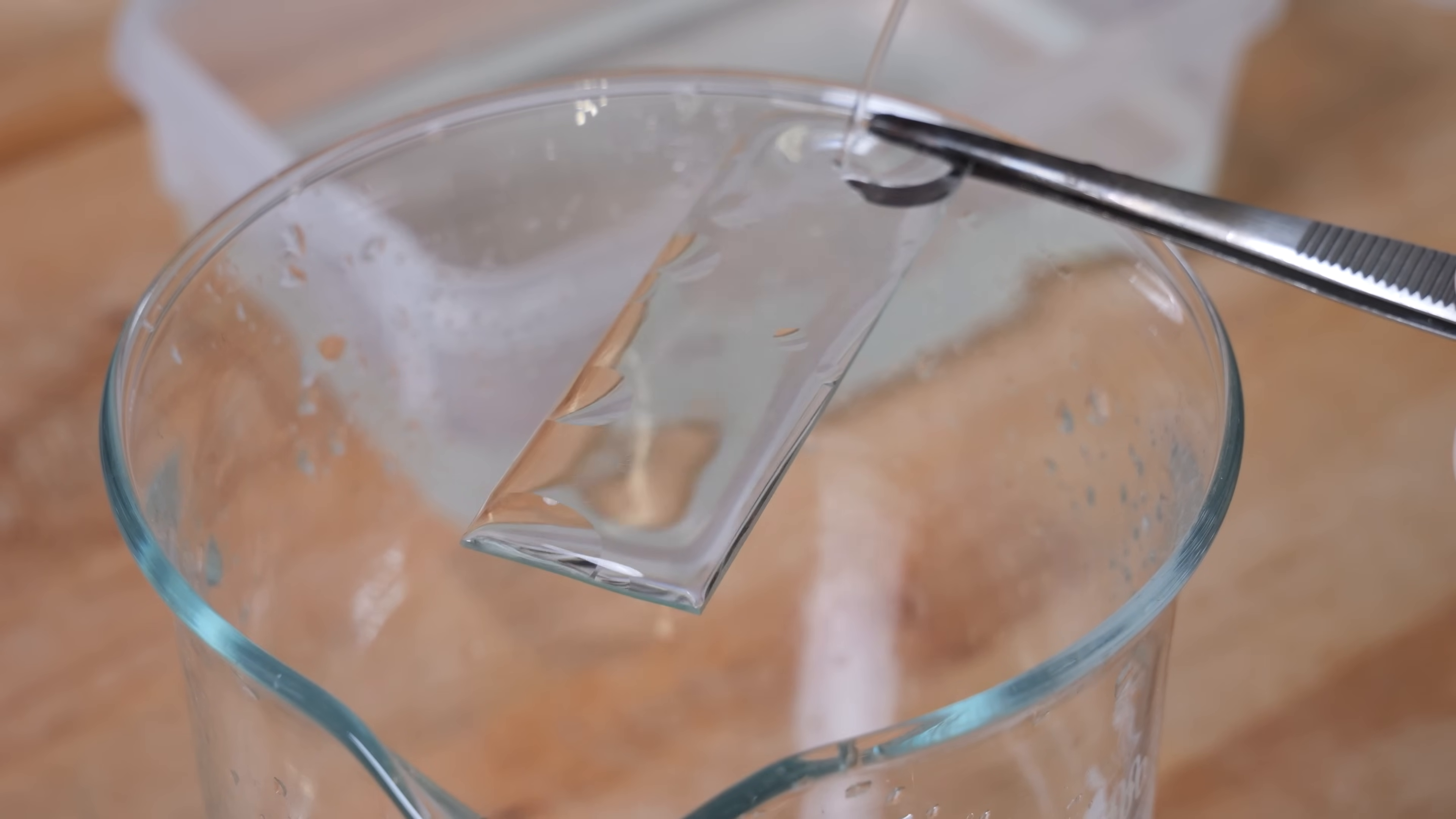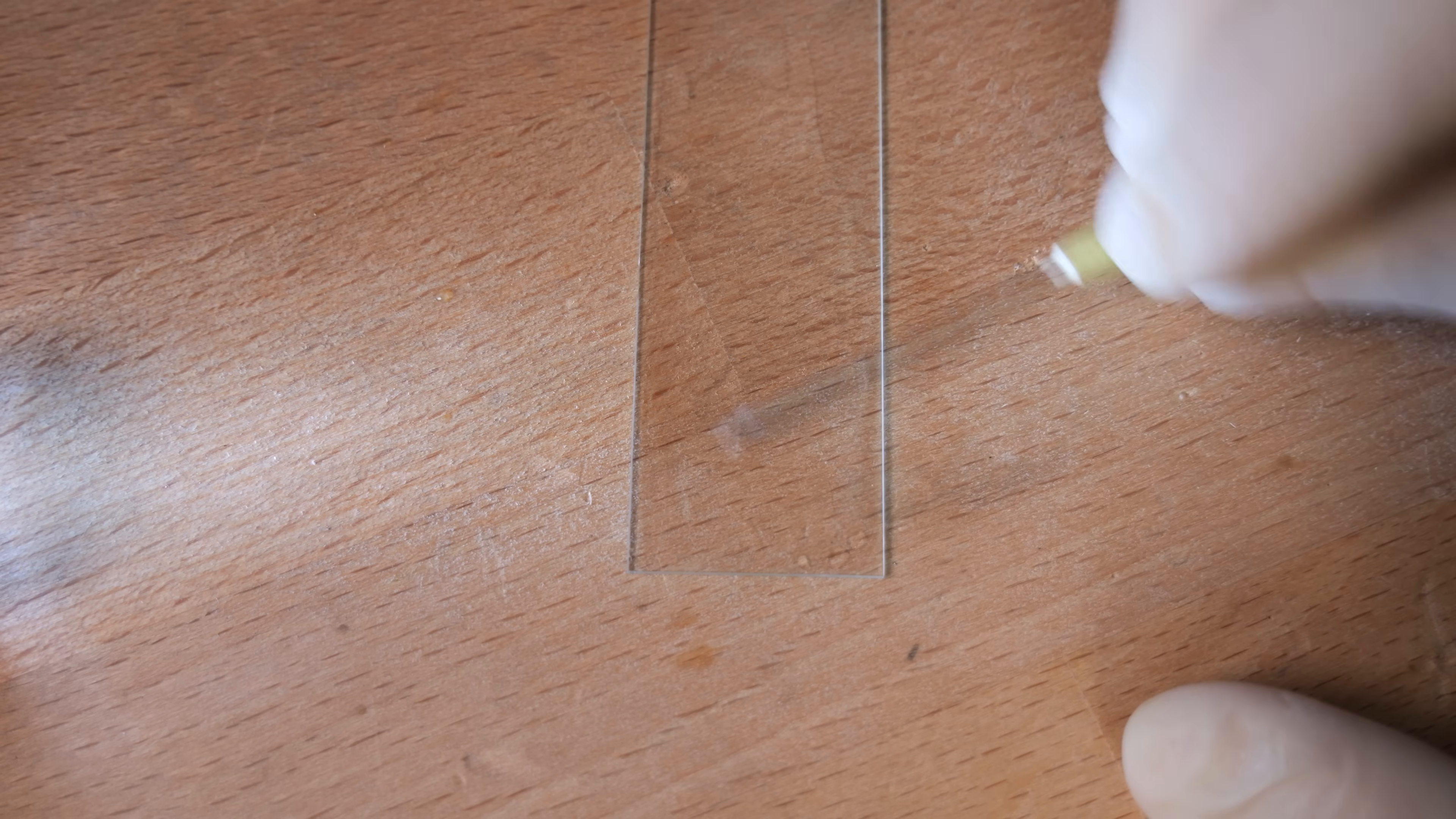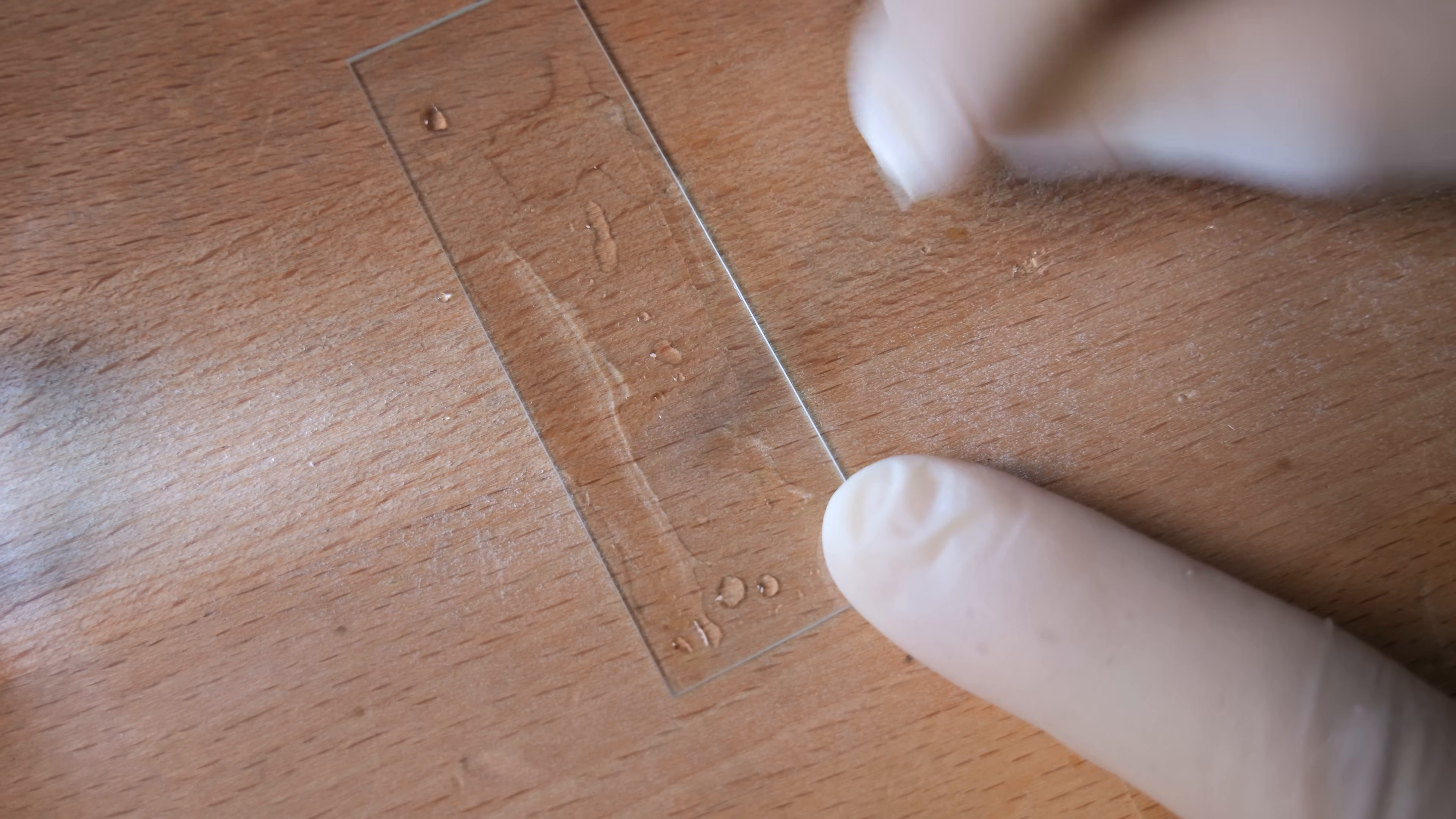A good indicator for how clean your glass surface is is the water break test. If the water forms droplets this means that there is still some hydrophobic residue on your glass and it's still contaminated. If you can coat the whole glass surface with an even layer of water it means that most of the contamination is gone. If I take a clean glass slide and place a drop of water on it, it can be easily spread into a uniform layer on the glass surface without forming drops. If you compare this to this uncleaned glass slide you can see that the water forms droplets due to the hydrophobic surface contamination and does not want to form a uniform layer of water.